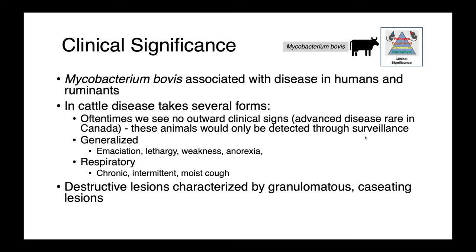In cattle, disease associated with mycobacterium bovis takes two forms. Oftentimes we don't see any outward signs at all — most likely the case in Canada, where we've eradicated it from our domestic herd, so any animals with M. bovis would be detected early before obvious classical pathological lesions develop. In animals that do have lesions, we can have generalized disease where cattle are emaciated, lethargic, weak, and anorexic, or respiratory disease where they have a chronic, intermittent, moist cough. Mycobacterium bovis infections are associated with destructive lesions characterized by granulomatous, caseating, necrotic foci.